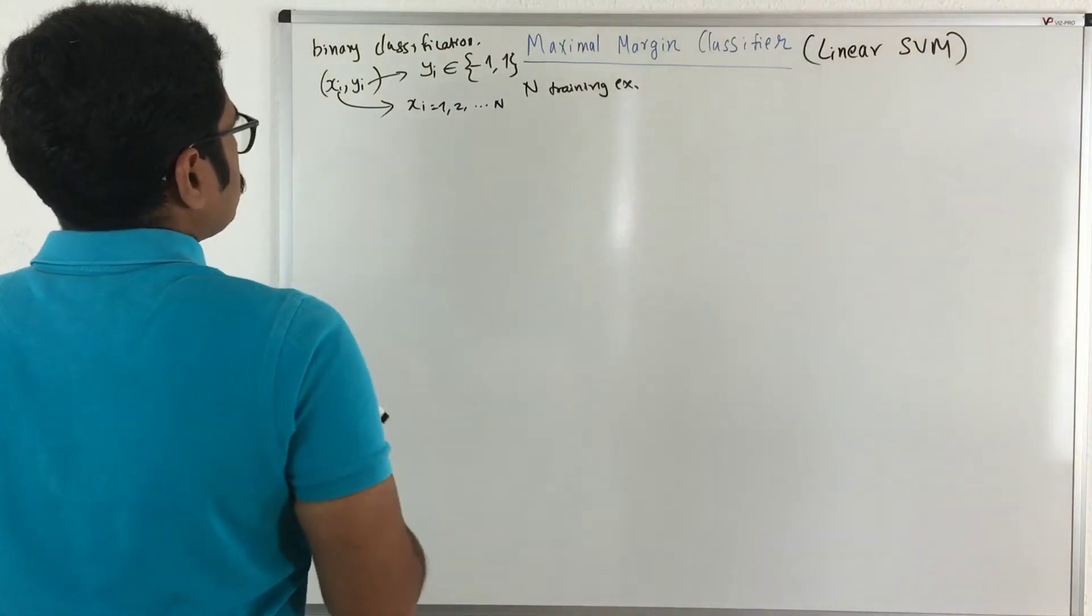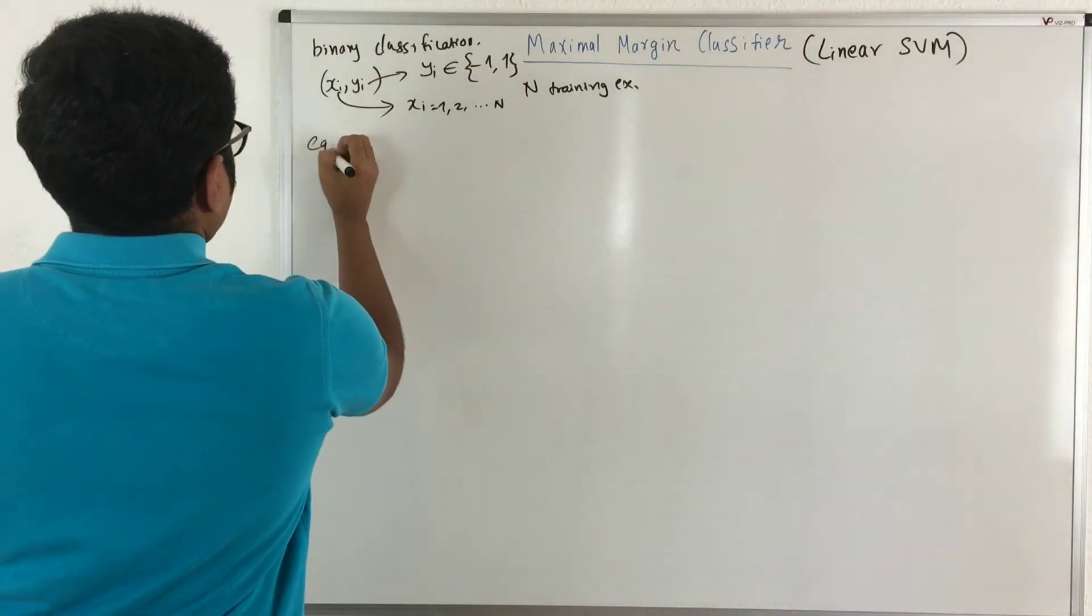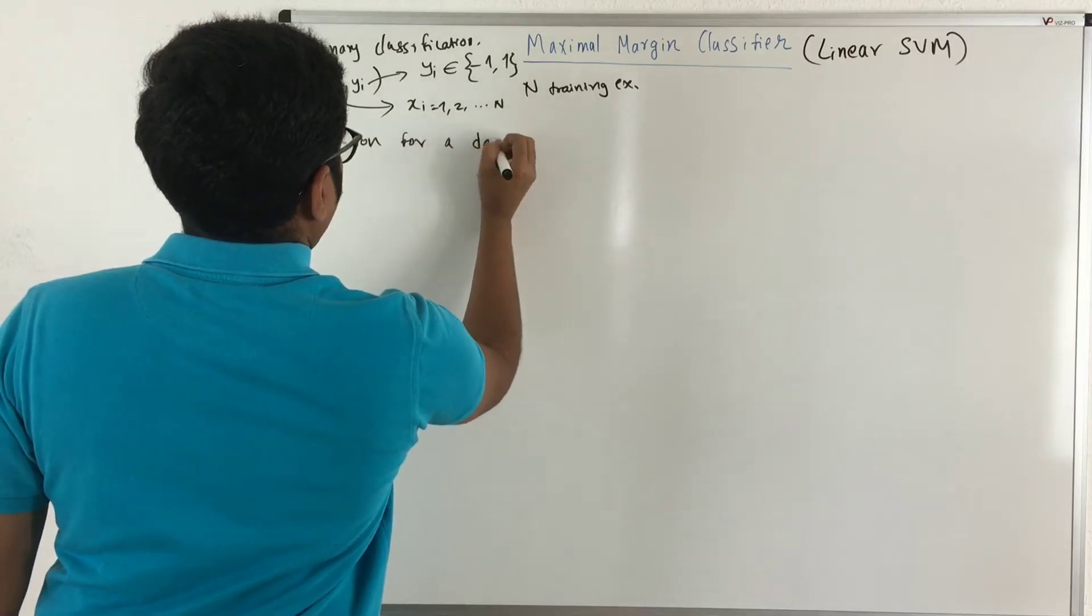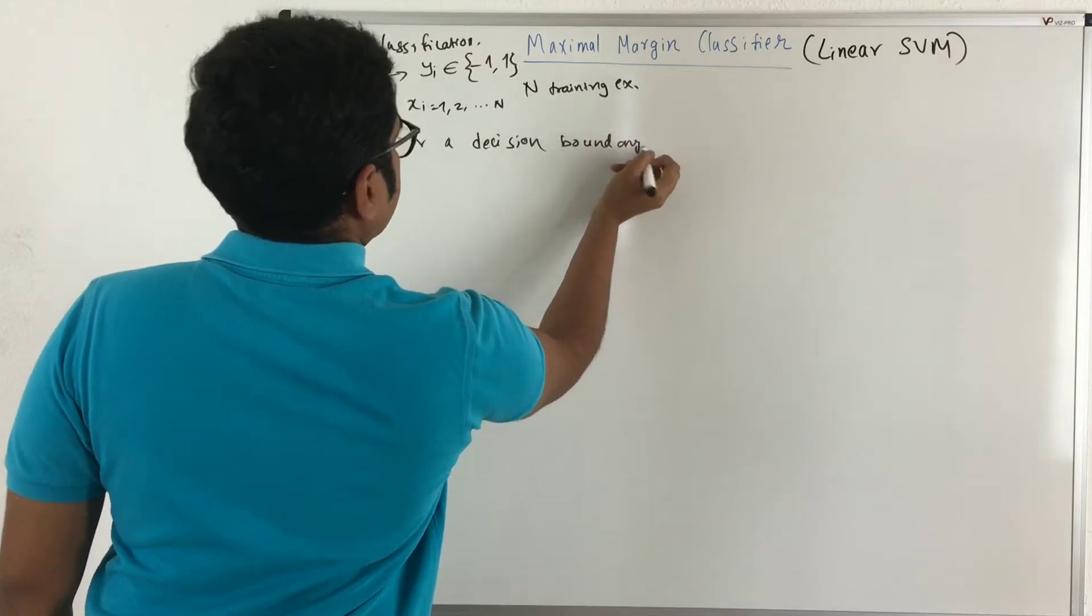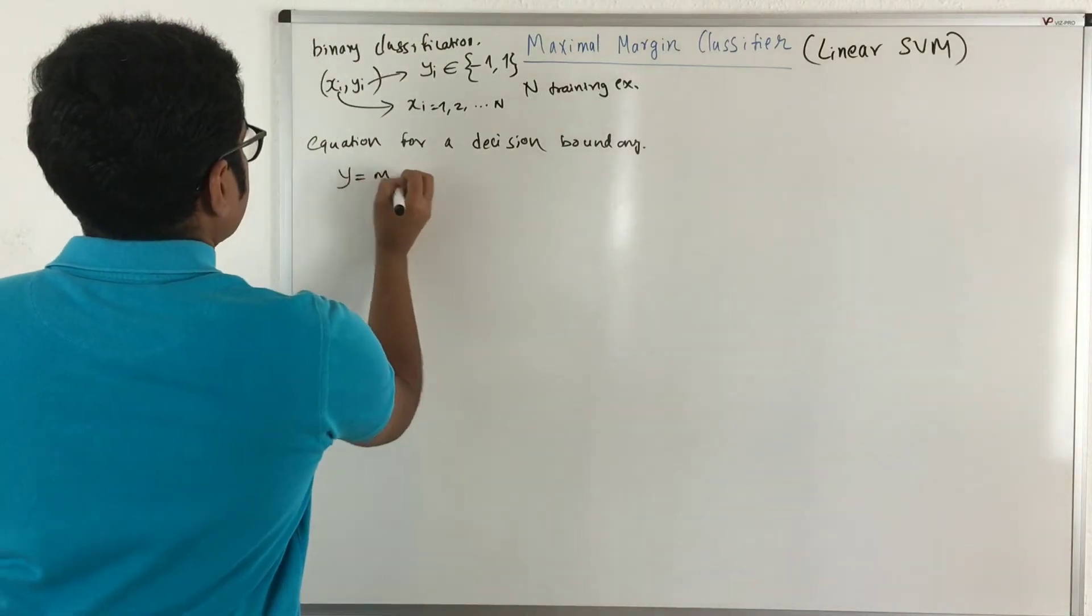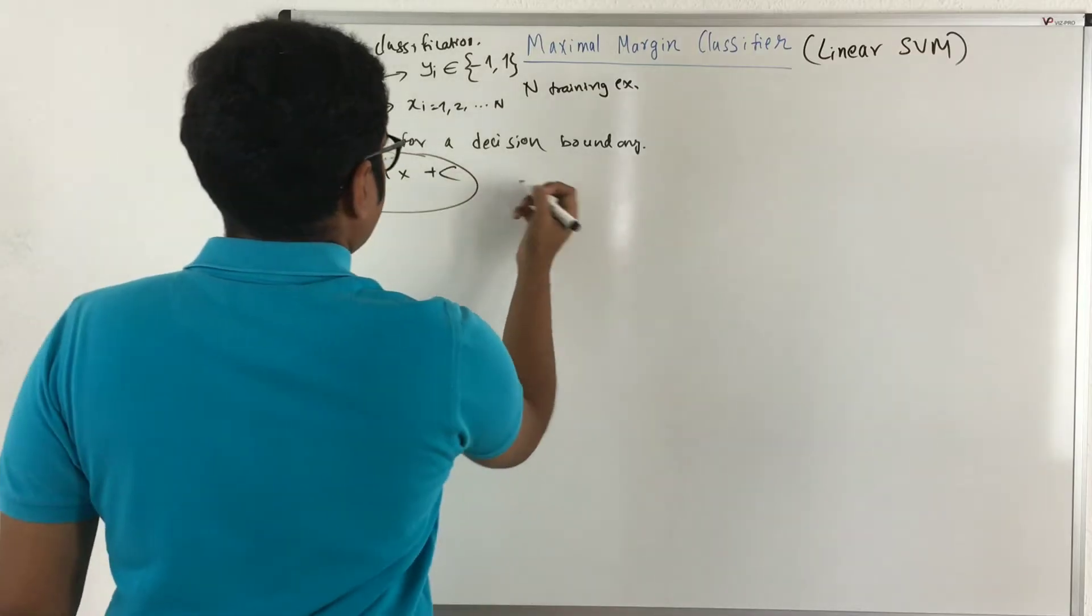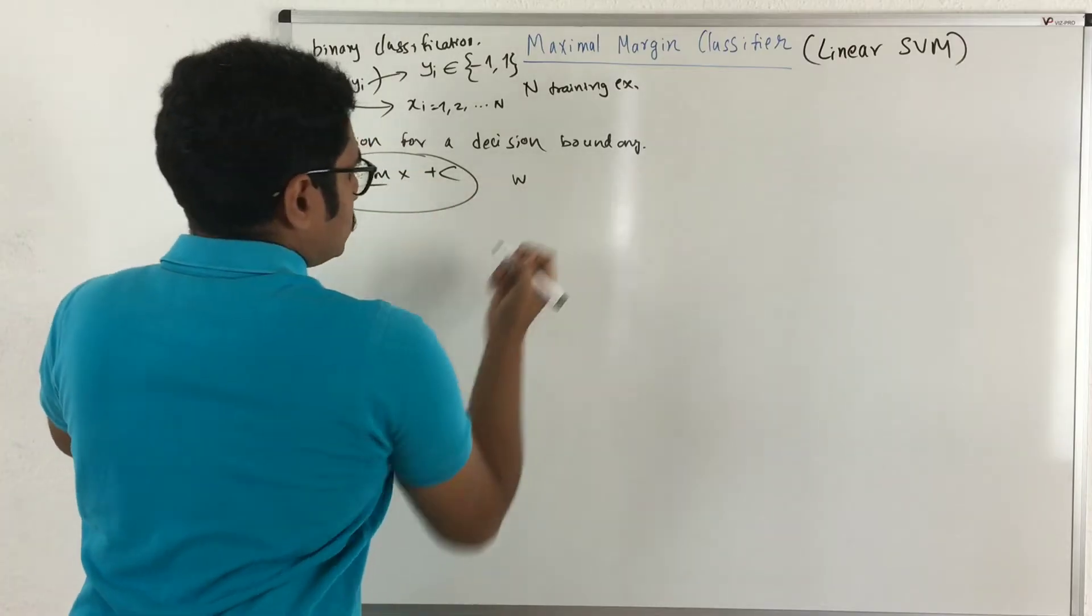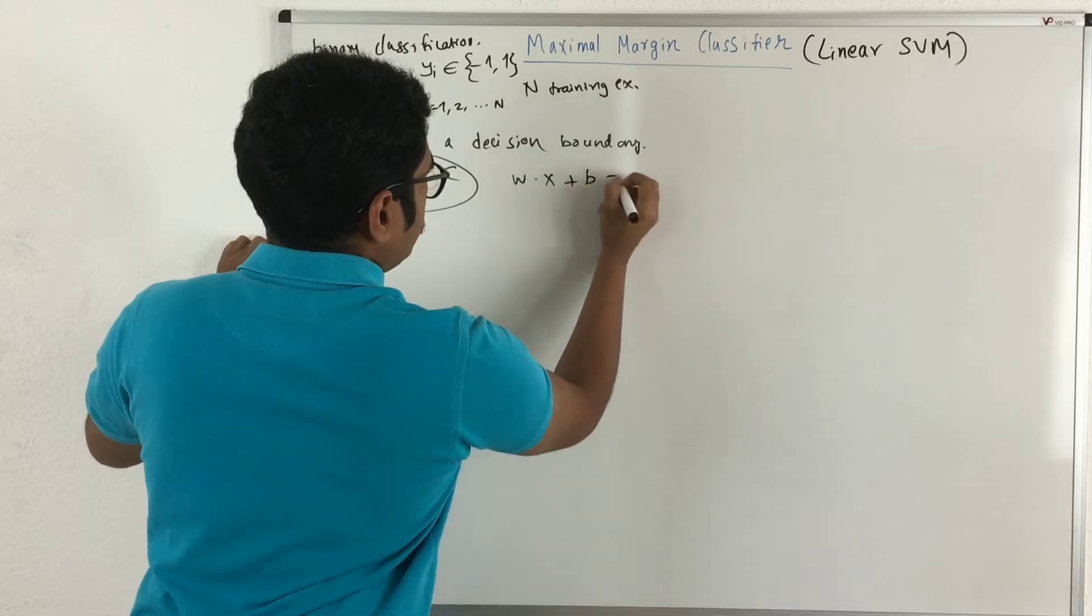So with this, what we do is we first write the equation for a decision boundary. The equation for a decision boundary, especially in case of linear SVM, is given with the help of slope intercept form: Y equals MX plus C. By taking this as the midpoint, we substitute, that is why we write M as the weight W, then you have X that is the input vector, then we have B, and it is equal to 0.